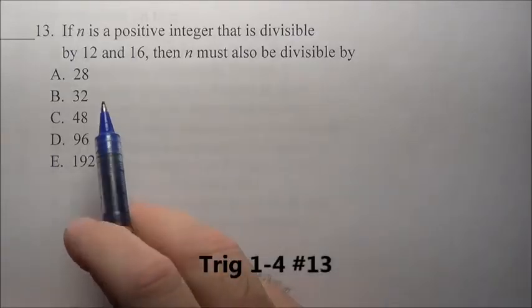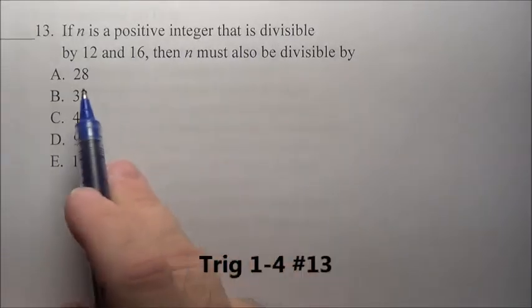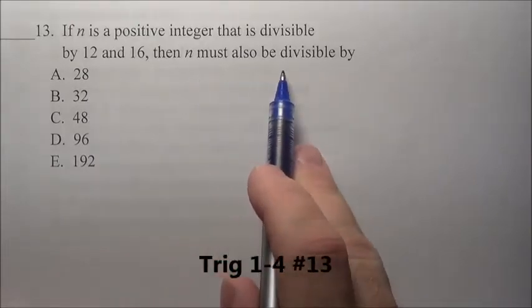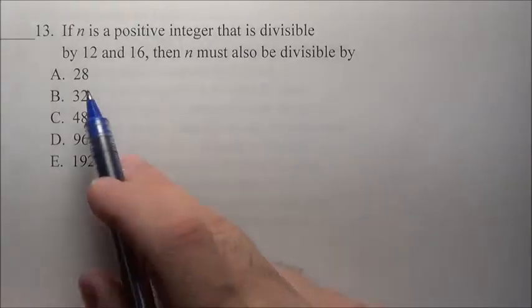Alright, here's problem 13. It says if n is a positive integer that is divisible by 12 and 16, then n must also be divisible by which of these numbers?